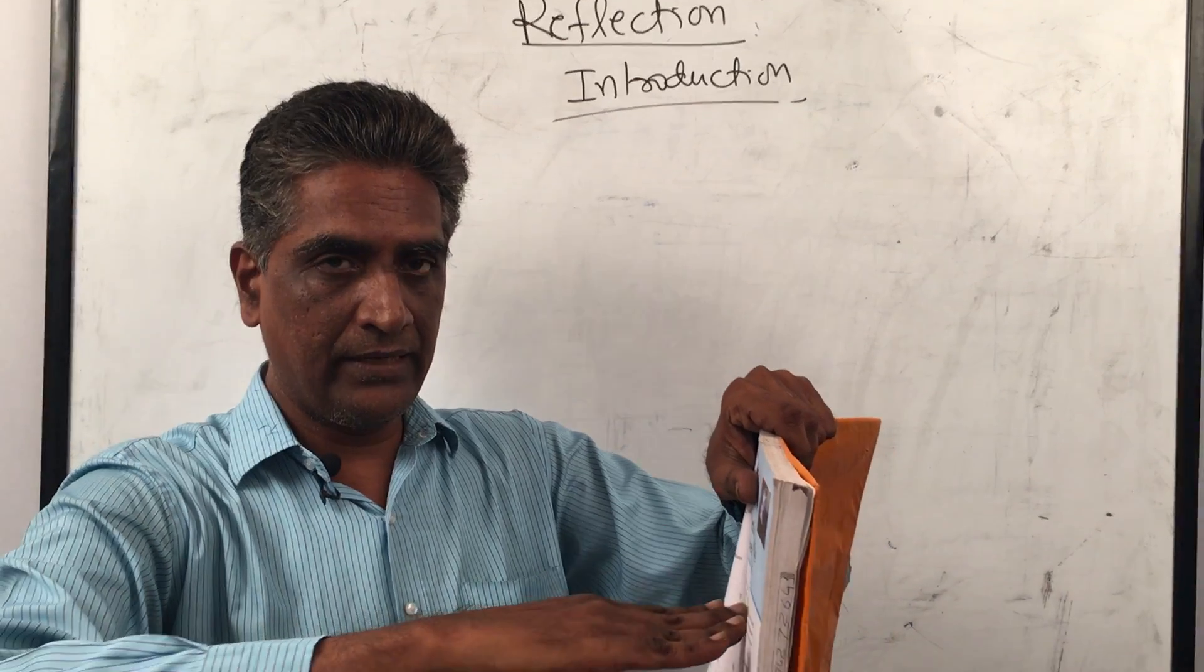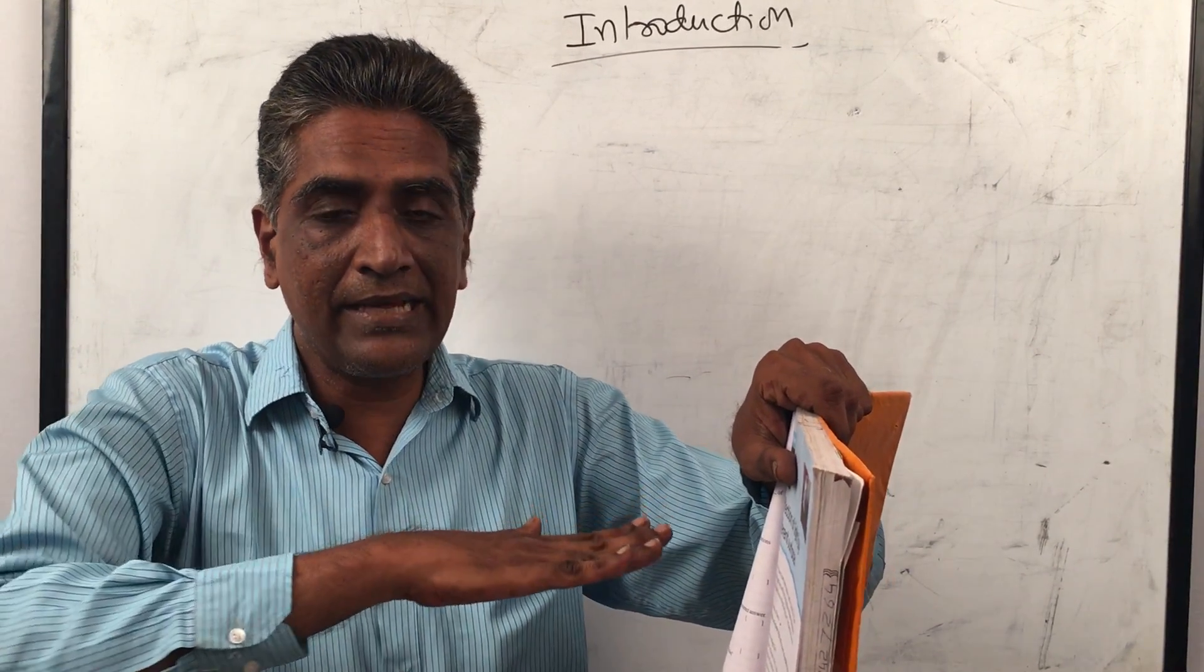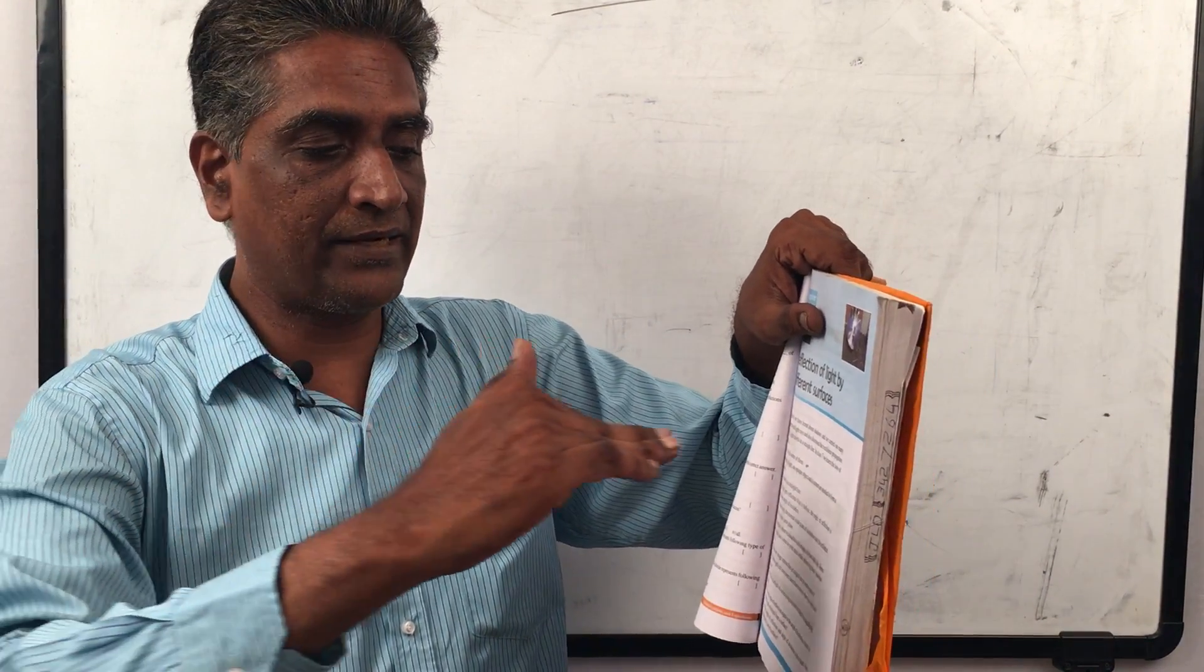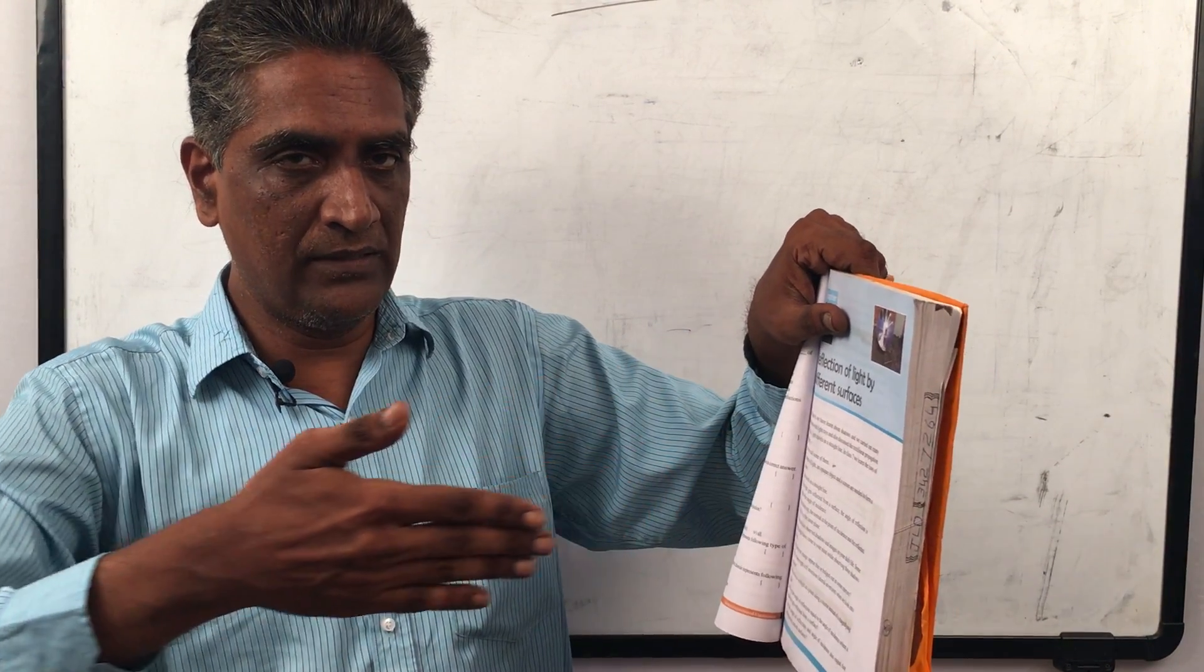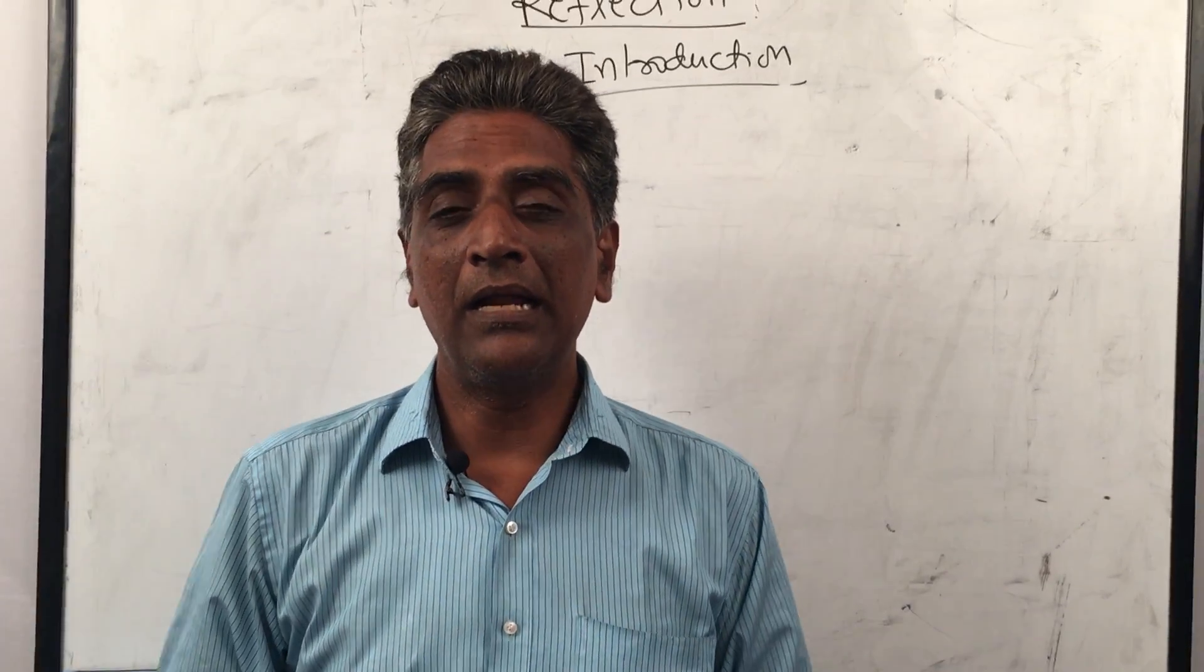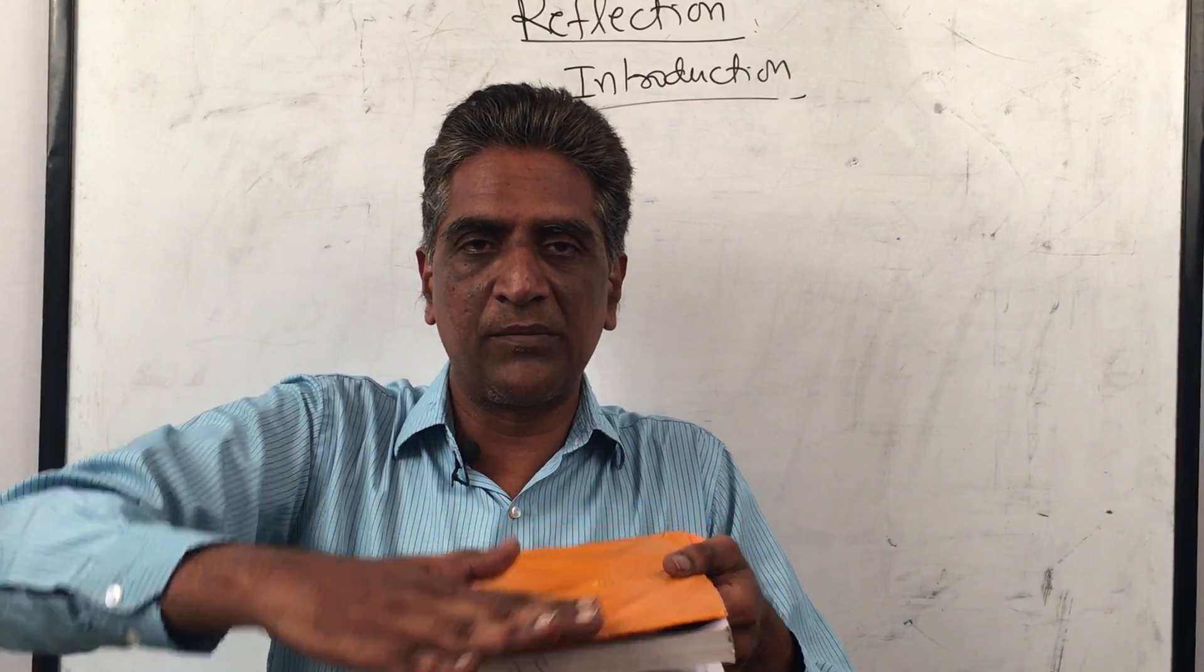The incident ray, the normal, and the reflected ray lie in the same plane. They don't go like this. Suppose this is the incident ray, this is the normal, and this is the reflected ray. All these three rays lie in the same plane. If I put a book like this, it will all be on this book.